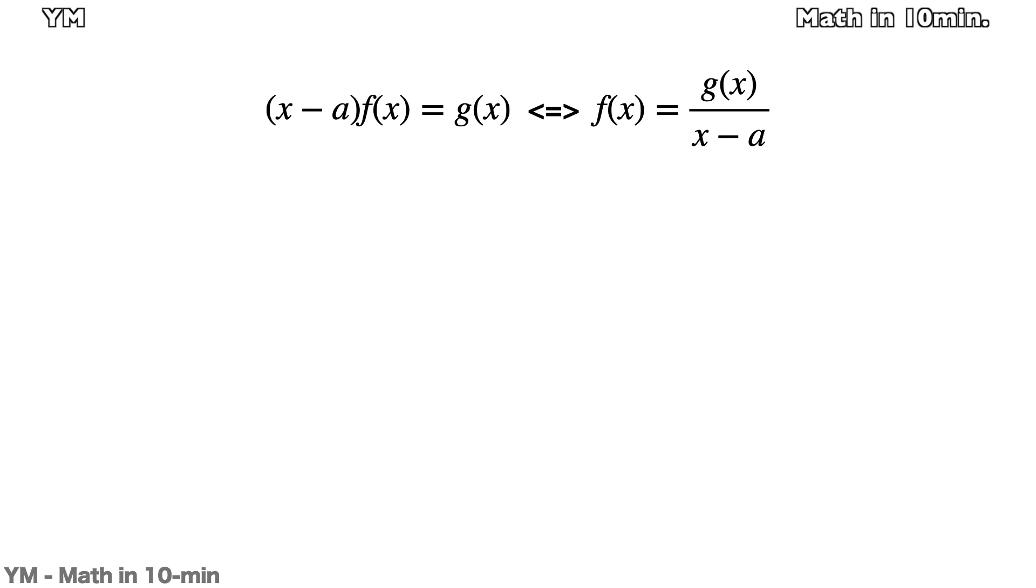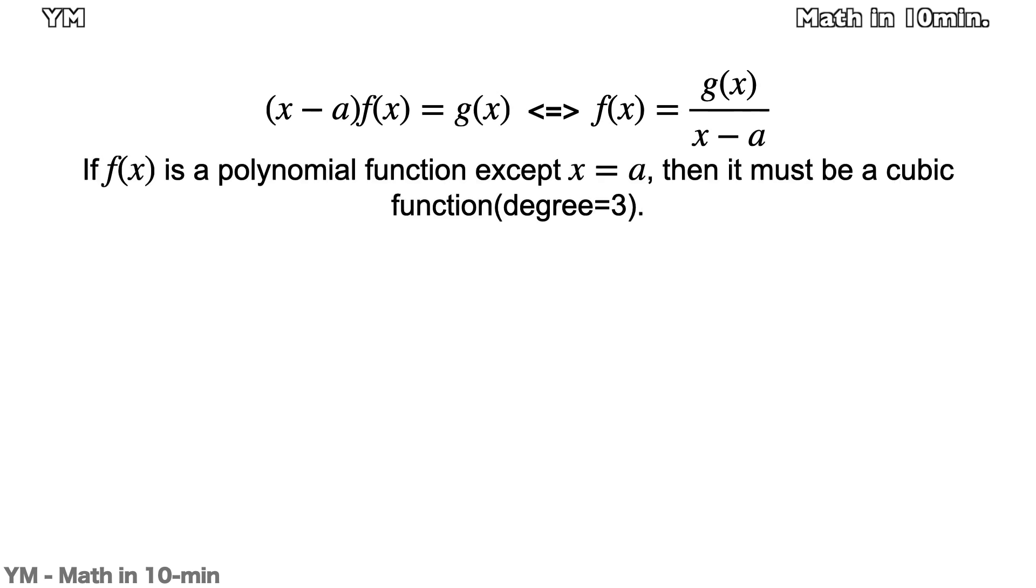We know that g(x) is a quadratic polynomial function, but how about f(x)? Except x = a, it will be either a polynomial or a rational function. Then let's suppose that f(x) is a polynomial function. It must be a cubic function since g(x) is quadratic and divisible by x - a.